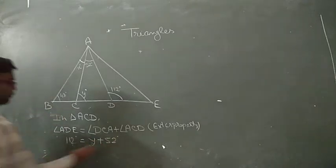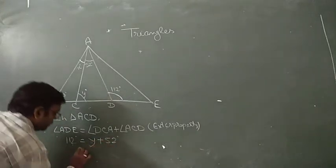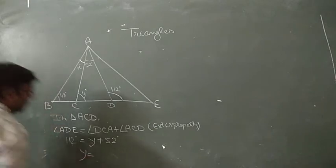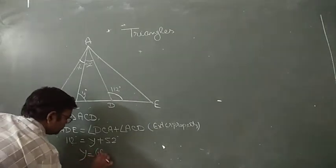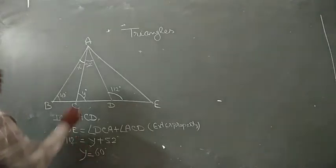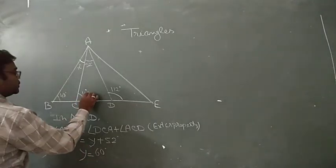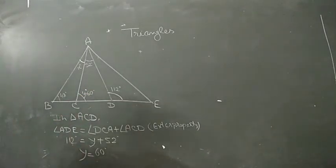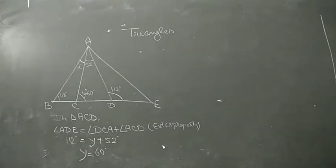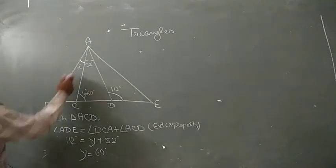From this we can find the value of y. y equals 112 minus 52, which gives y equals 60 degrees.